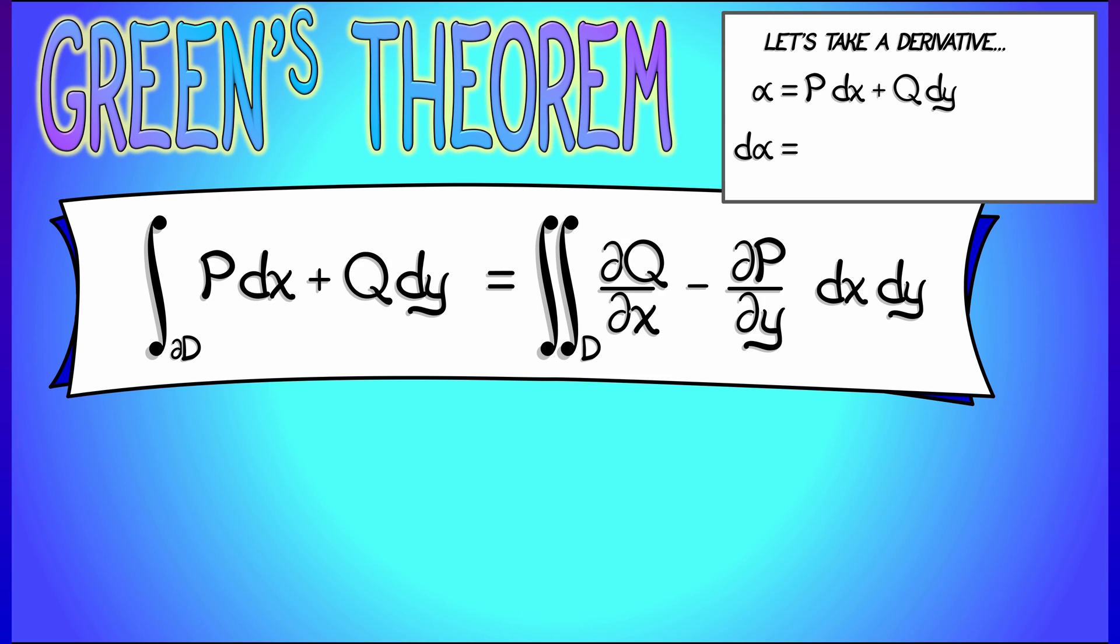I get, let's see, partial p partial x dx wedge dx. Oh wait, dx wedge dx is zero. The only term that survives is partial p partial y dy wedge dx. And likewise, with the second term, the only thing that survives when taking a derivative is partial q partial x dx wedge dy. And that means, using the fact that dy wedge dx is minus dx wedge dy, we can combine the terms in this two-form, d alpha, together.